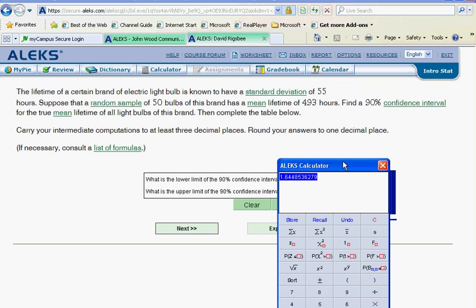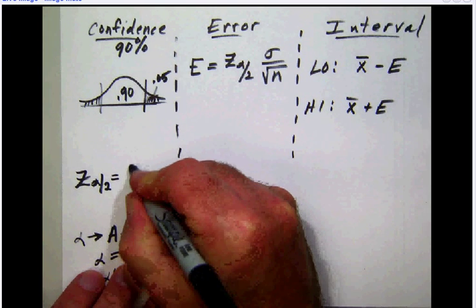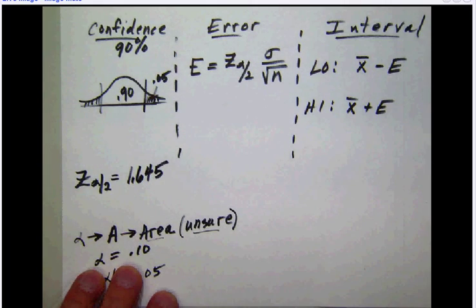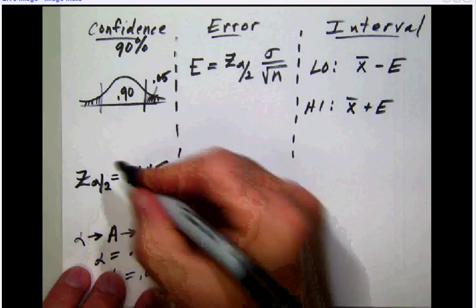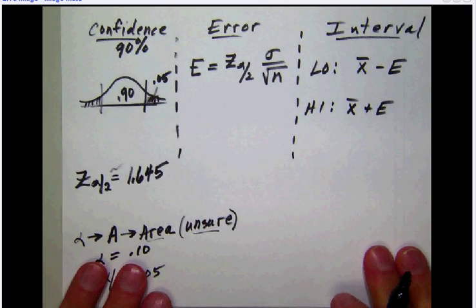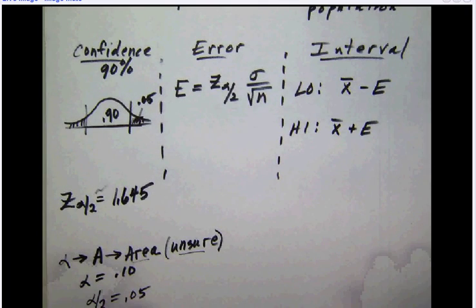It tells us here that we should round intermediate computations to at least three places. So if we round this number, we would call it 1.645. And that value right there is our Z alpha over two, which is about 1.645 to three decimal places. We have accomplished the first major goal of our problem.